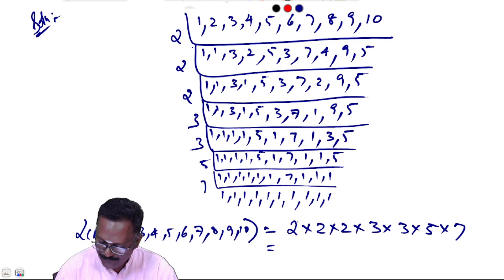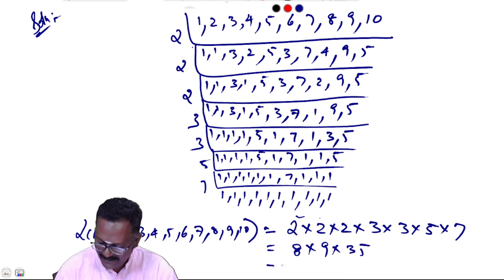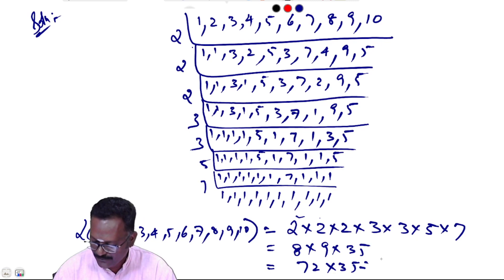So: 2 to the power 4 is 16, divided to 8; 3 squared is 9; 7 times 35; 72 into 35 — that is equal to 2520.